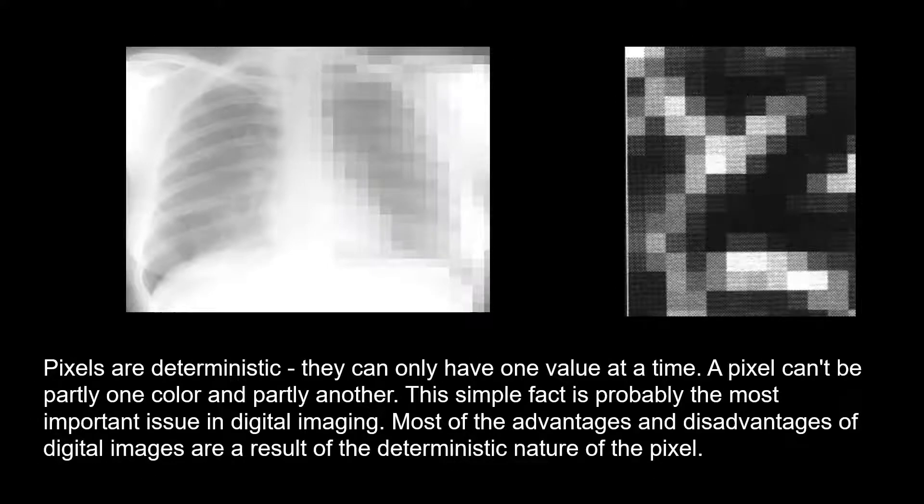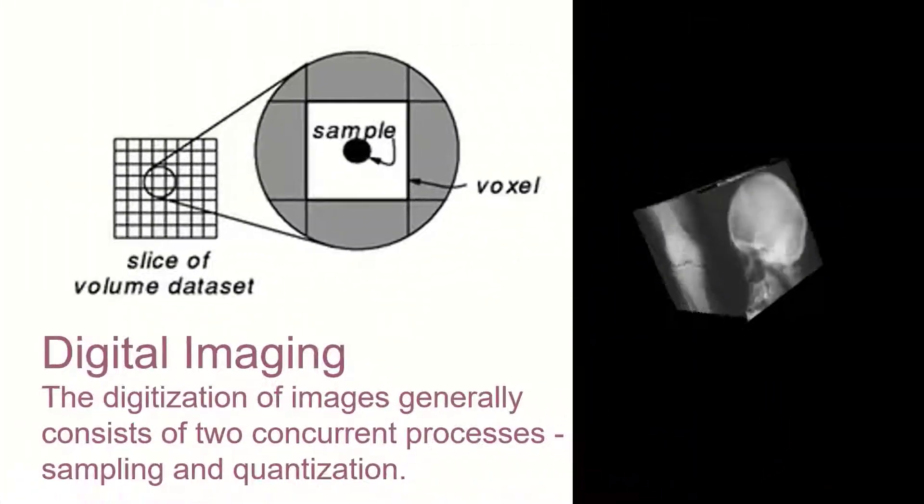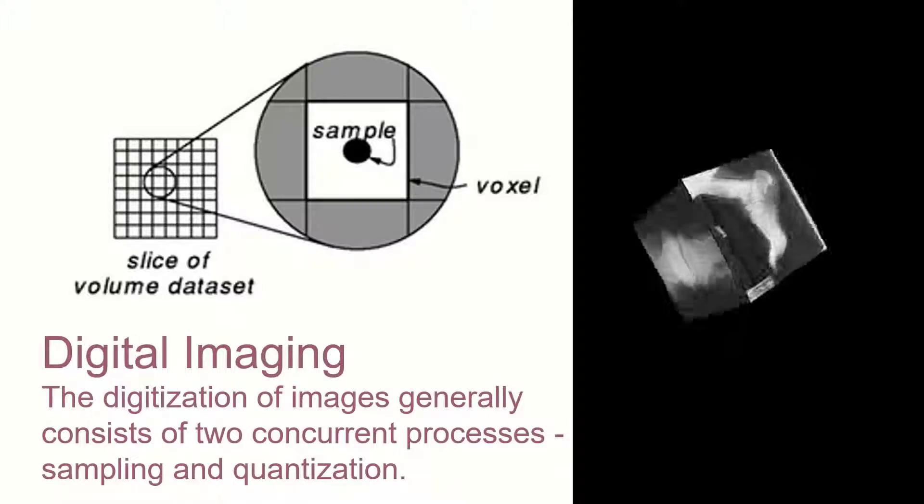Pixels are deterministic. They are sampled and represented by a number. They can only have one value at a time. A pixel can't be partly one color and partly another. Digital signals are sampled and quantified to create images.